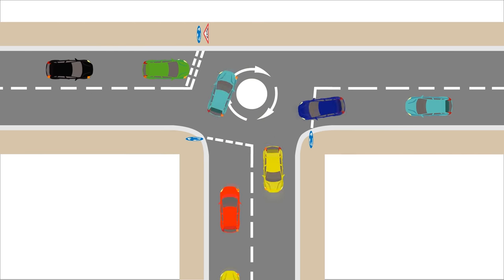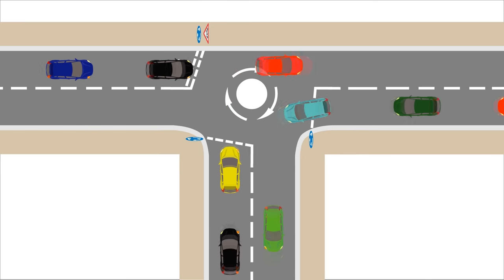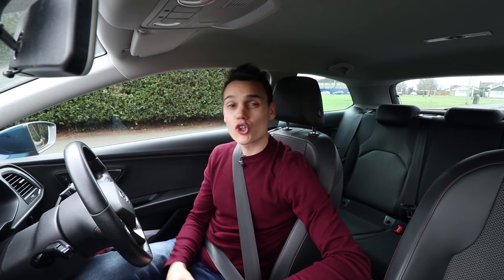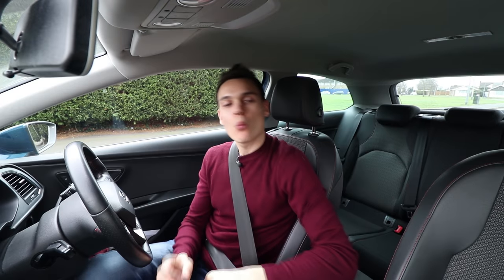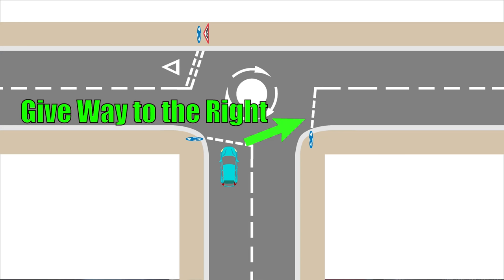Oh gosh. Well, yeah, that's complicated. I can certainly see why mini roundabouts get confusing. If you look at all the cars, the roundabout looks like a complete mess. But once you know where to look, it actually gets quite simple.